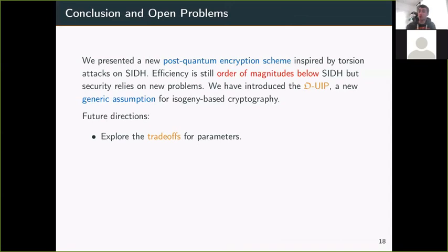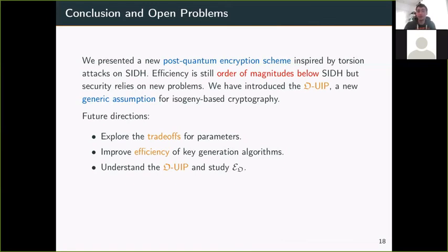Here are a few open questions and directions for future work. We need to explore the other trade-offs of parameters and maybe try to see if we can make key generation efficient while getting the fastest possible encryption and decryption. It would be nice to have a comparison with SIDH in this setting. We also need to understand better the OUIP. In particular, we need to study the set E_O and its cardinality to get a good estimation on the complexity. Finally, we need to study more the CETA security, which is based on several new problems different from the OUIP. Thank you for watching this video, and please have a look at the full ePrint version for more details.